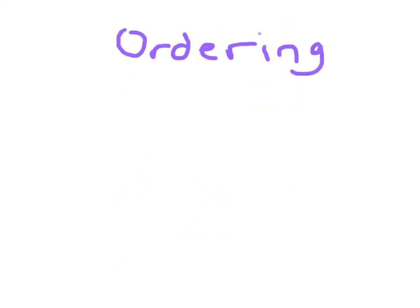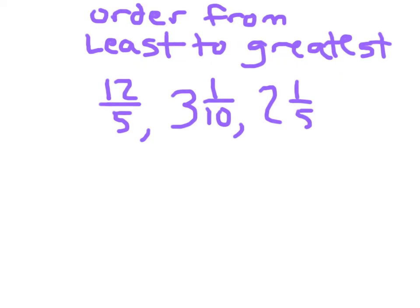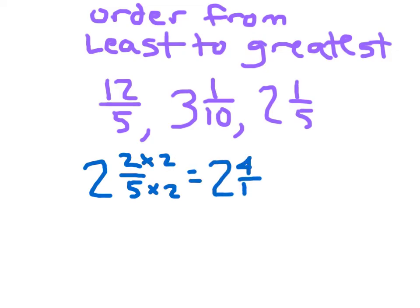Let's now take a look at ordering — ordering these mixed numbers and fractions. This says to order from least to greatest. There's an improper fraction and two mixed numbers. It's easiest to change that improper fraction to a mixed number. 5 goes into 12 two whole times with a remainder of 2, giving 2 and 2 fifths. Now we're comparing 2 and 2 fifths, 3 and 1 tenth, and 2 and 1 fifth. It'd be nice to get a common denominator — 10 in this case. So 12 fifths is 2 and 4 tenths, and 2 and 1 fifth is 2 and 2 tenths. Then we can compare them.